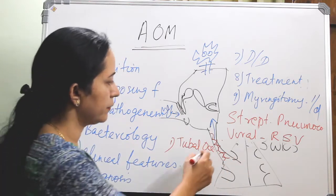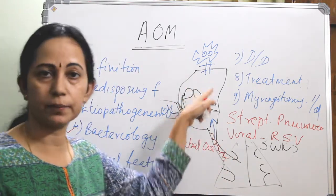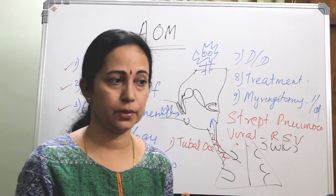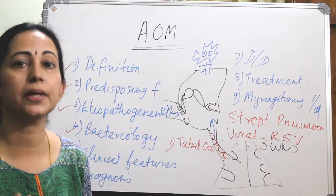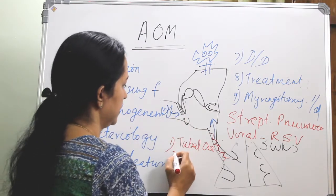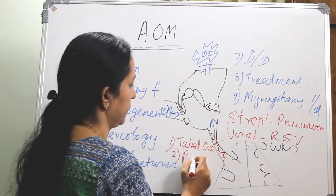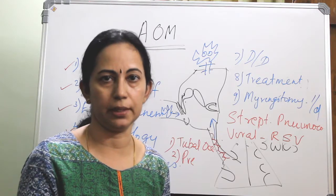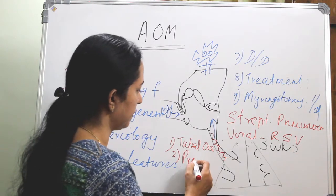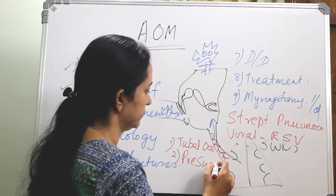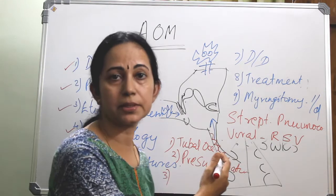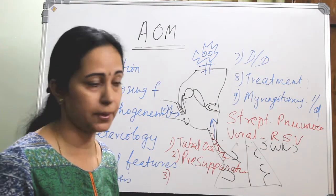If there is tubal occlusion, air will not reach the middle ear, so there will be negative pressure. That is the stage of pre-suppuration. Just before suppuration comes the pre-suppuration phase. And the third stage should be the stage of suppuration.